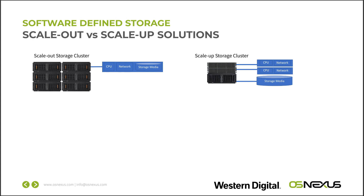What you see on the right is a scale up storage cluster. These use two servers and are highly available where the storage media is formed into a pool. If that pool needs to fail over to the other server because the active one is turned off, it'll automatically move over — it's an active-passive architecture. It's more cost effective when under a petabyte, and the scale up configurations do file and block, while scale out does all three: file, block, and object.